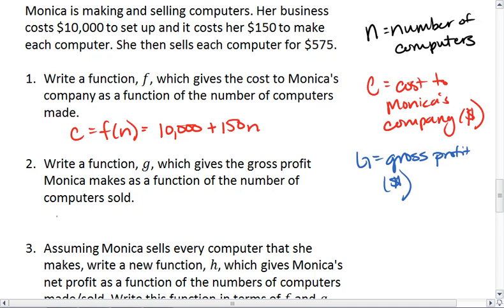So we'll let g be gross profit in dollars. Well then capital G, which is the function of the number of computers sold. We know Monica makes $575 for every computer sold. So g of n equals 575 times n.